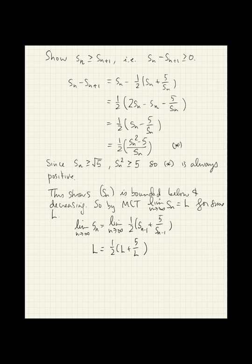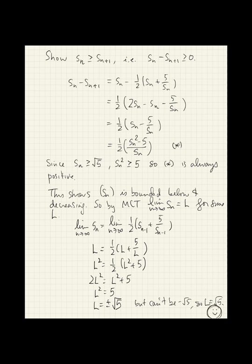So we'll solve this. Let's multiply through by L. We get L squared equals 1 half L squared plus 5. 2L squared equals L squared plus 5. L squared equals 5. So L equals plus or minus root 5. But it can't be negative root 5. So L equals root 5. And we're done.